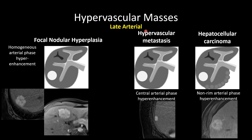A late arterial phase is essential for oncologic imaging. The late arterial phase is defined by opacification of the hepatic artery and at least partial opacification of the portal vein without hepatic vein opacification. Achieving a late arterial phase ensures contrast has reached the capillary beds so that hypervascular masses — predominantly supplied by arterial blood — will hyper-enhance relative to the background liver. An early arterial phase may cause you to miss arterial phase hyper-enhancement.